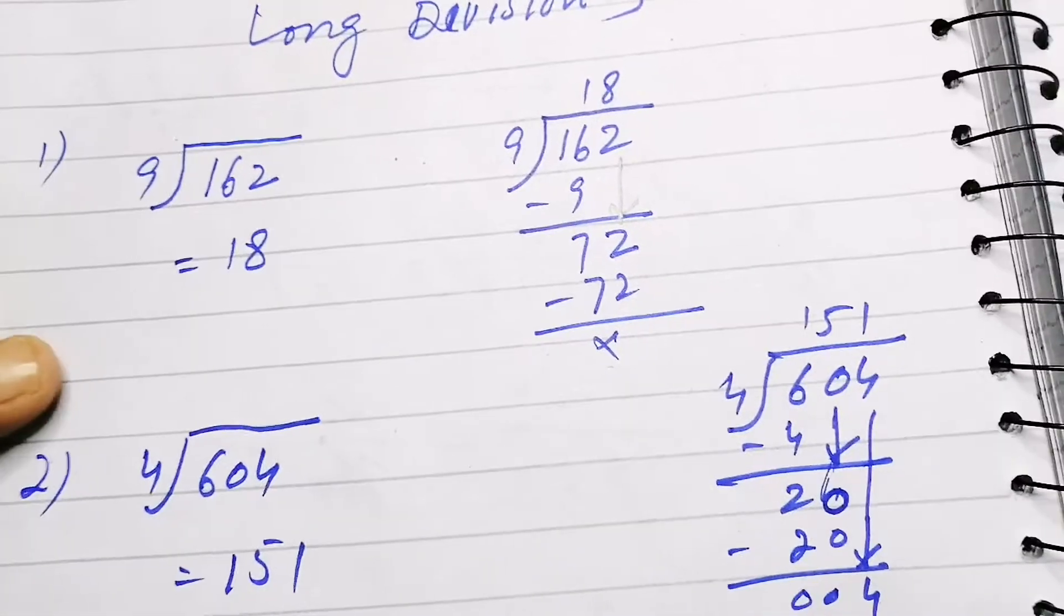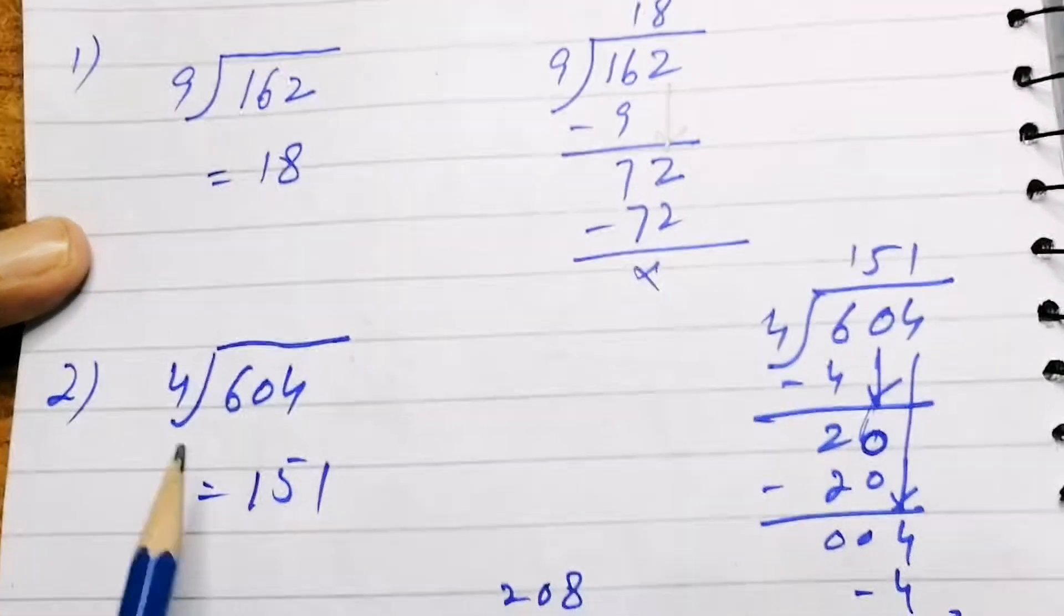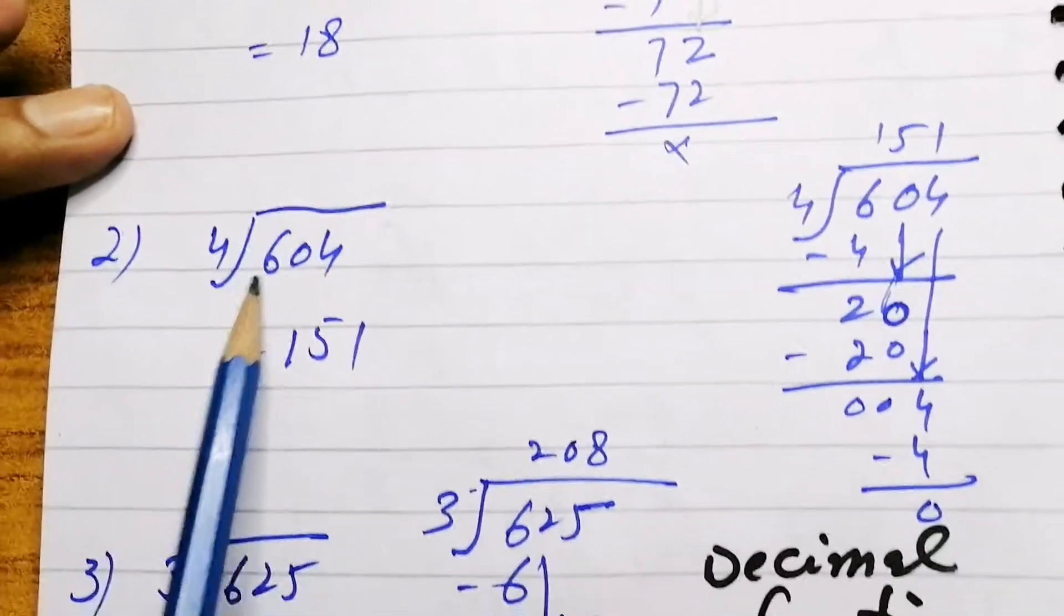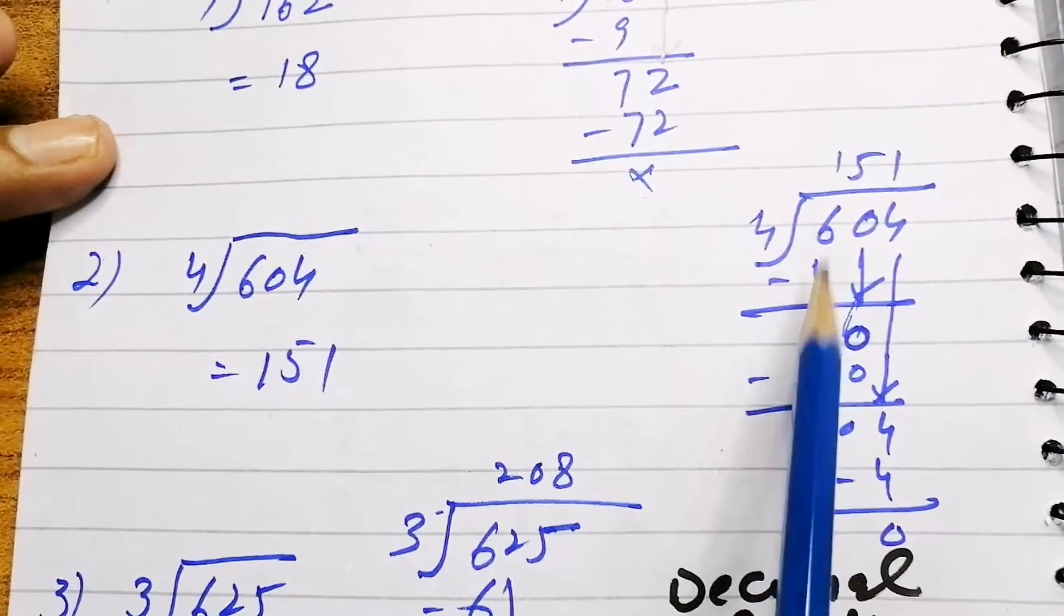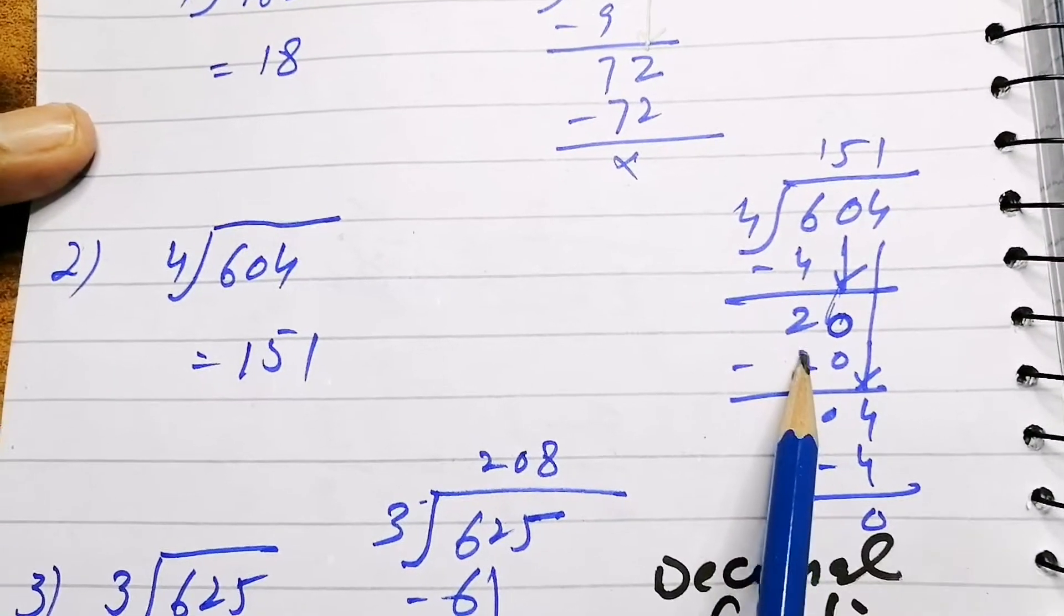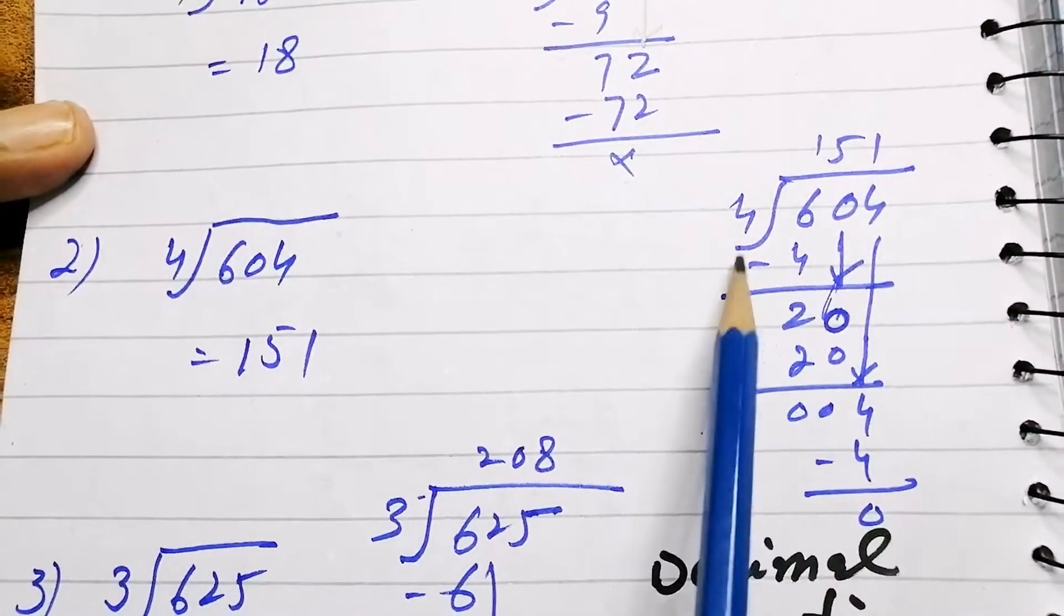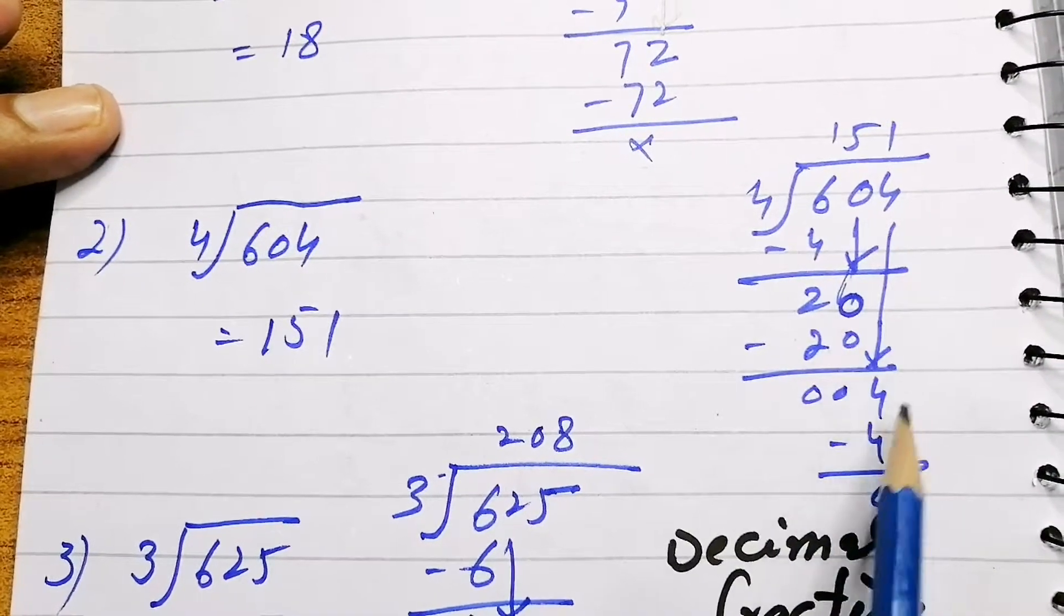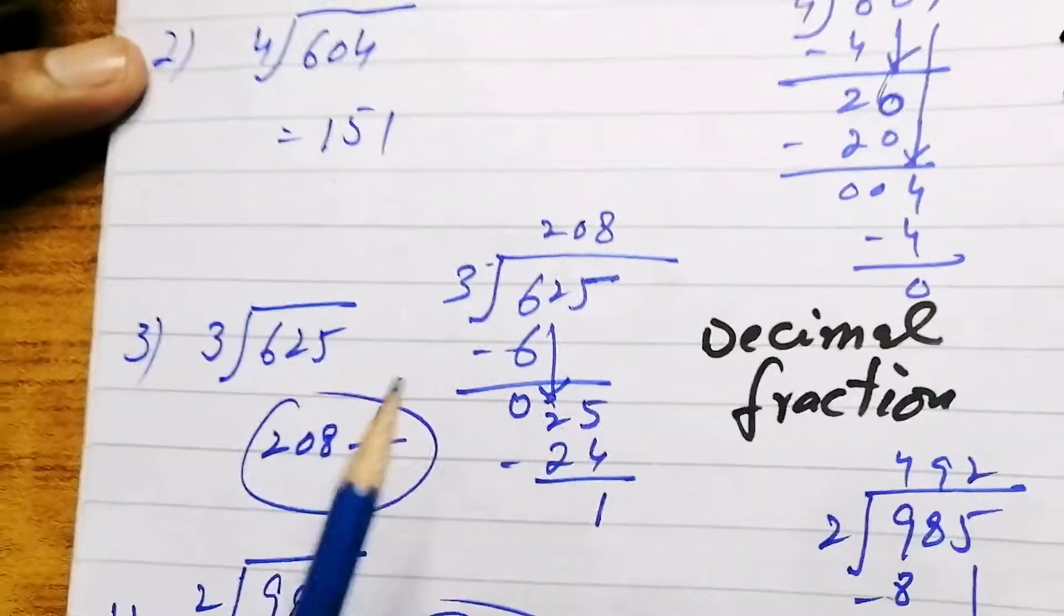Once you know the tables by heart, you will be able to solve easily. Next is 604 divided by 4. We divide: 4 1s are 4, 6 minus 4 is 2, then we bring 0 down. 4 5s are 20, and then we bring 4 down. 4 1s are 4, so 151 is the answer.